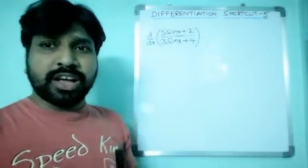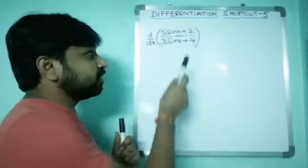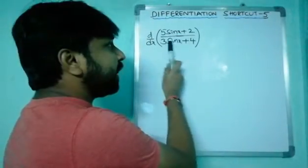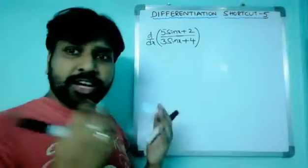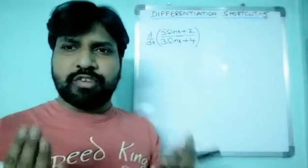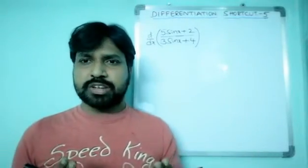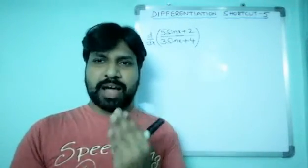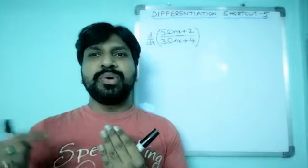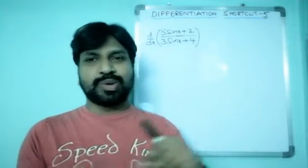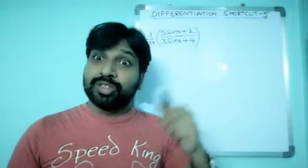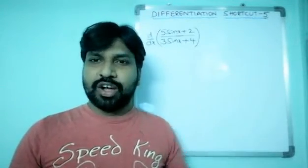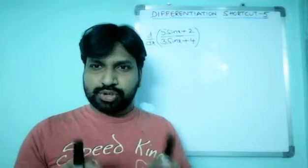Coming to the method to solve this question — it is of the form u/v. The formula for d/dx of (u/v) is: v·(du/dx) minus u·(dv/dx), all divided by v squared. That is the standard method, friends.